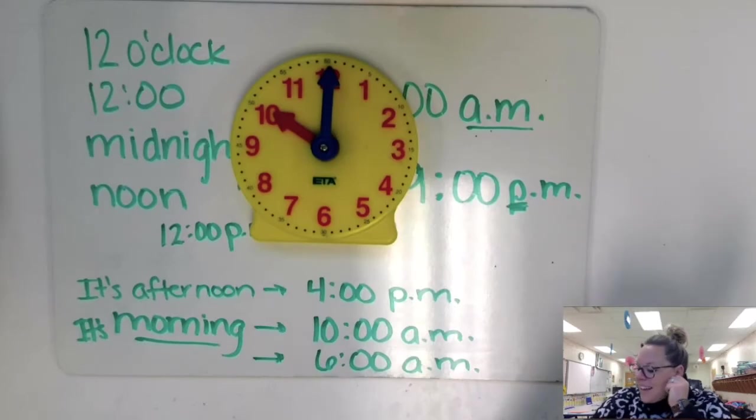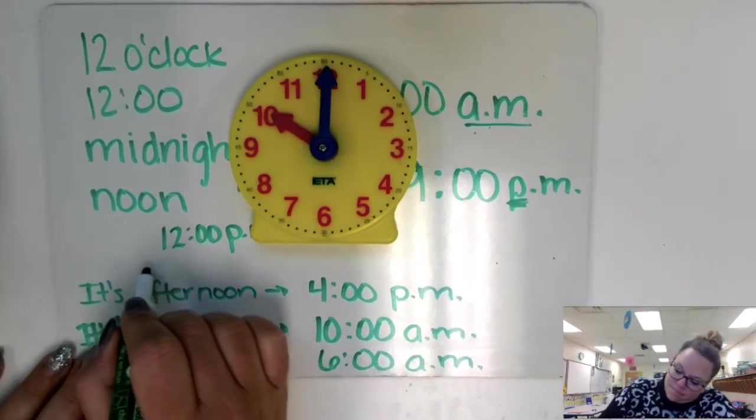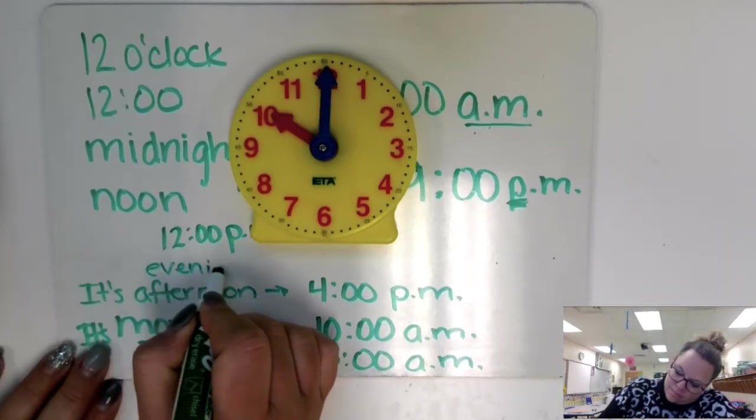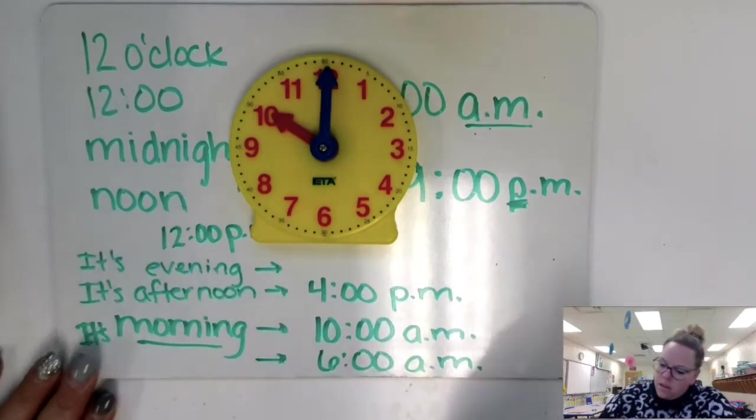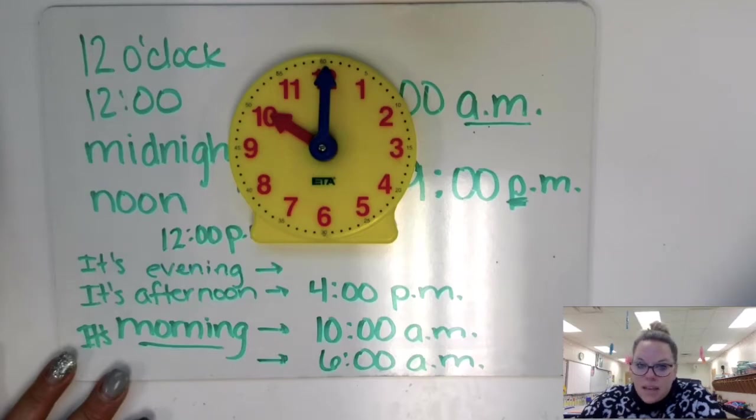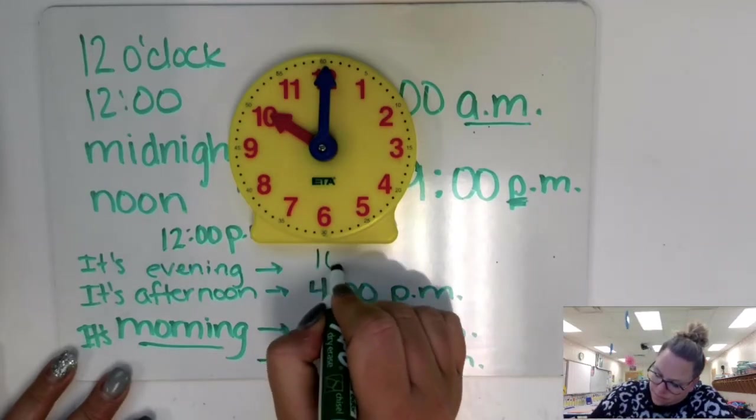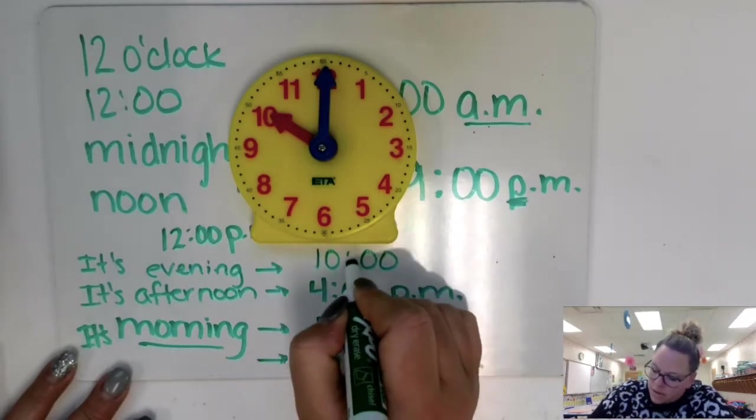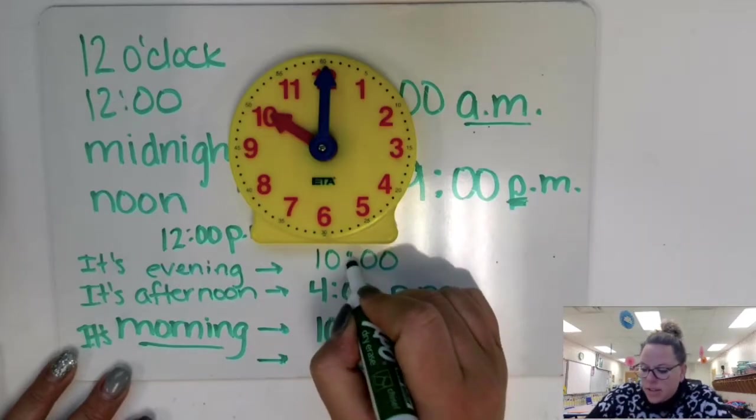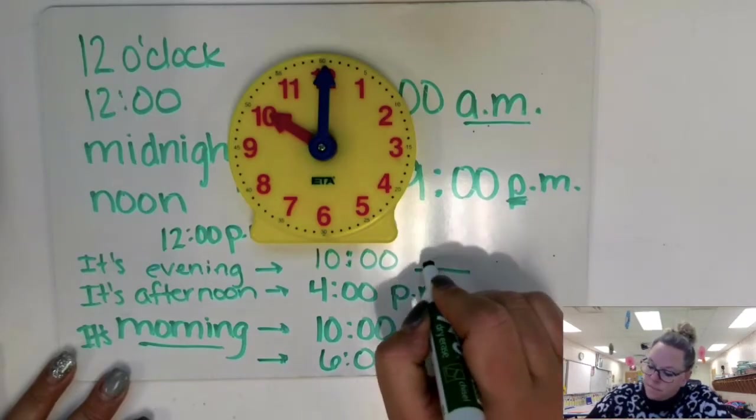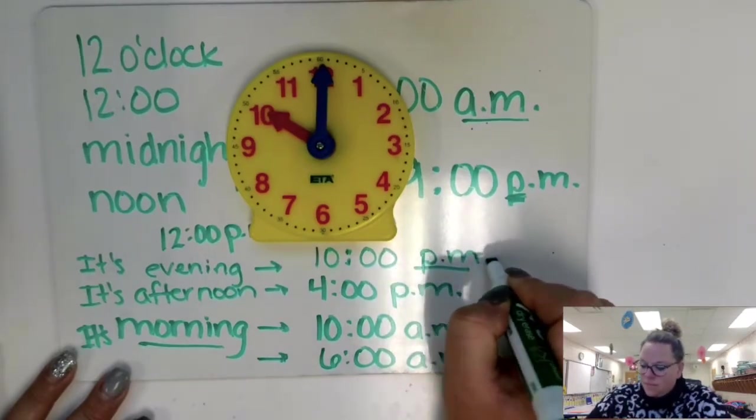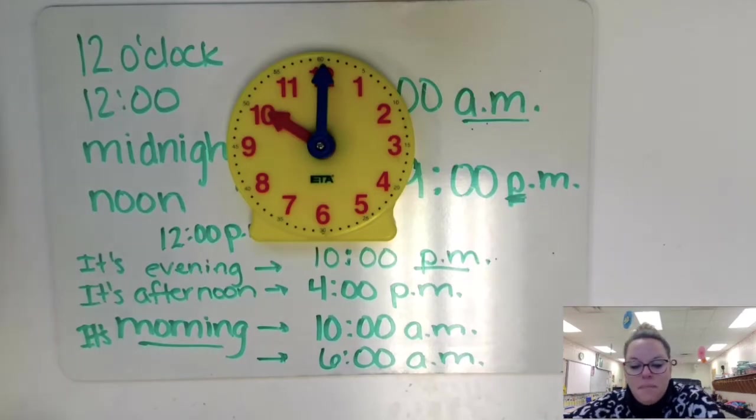What about this? It's evening. It's night time. What time is it now? It's evening. I'm hearing you say 10 o'clock, Mrs. Friedrich. And then what's our label if it's evening? A.m. or p.m.? Right. It's p.m.